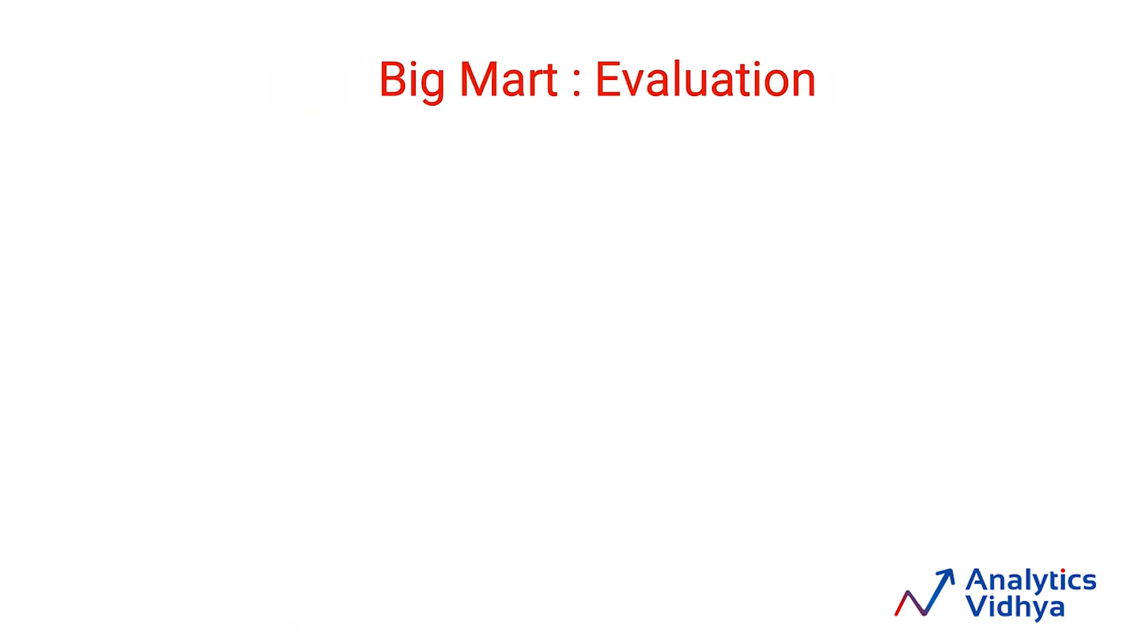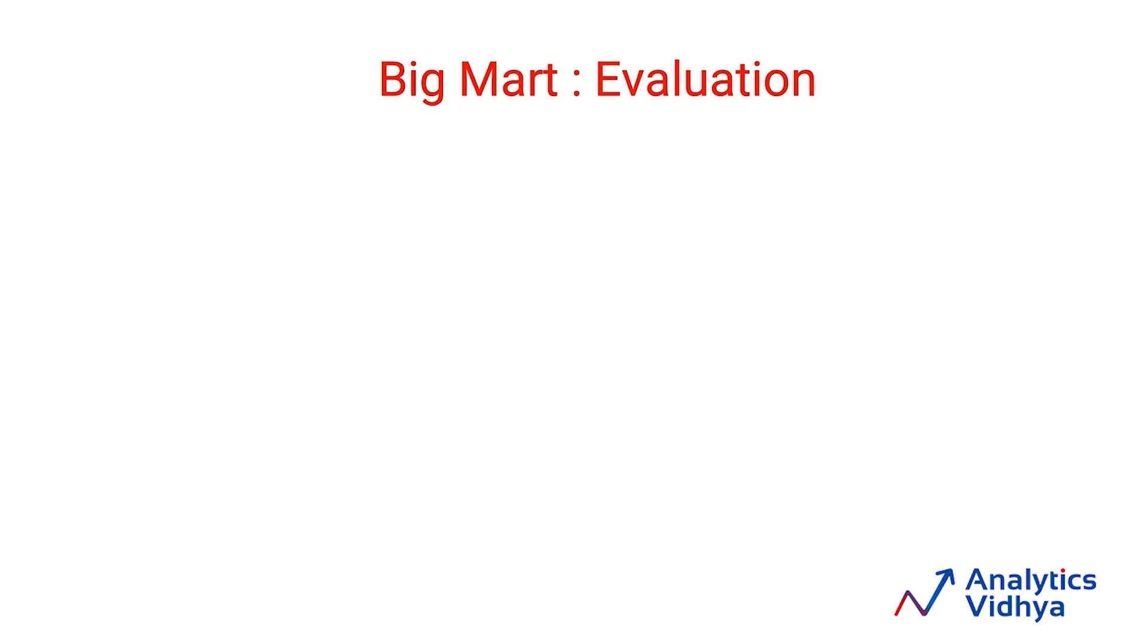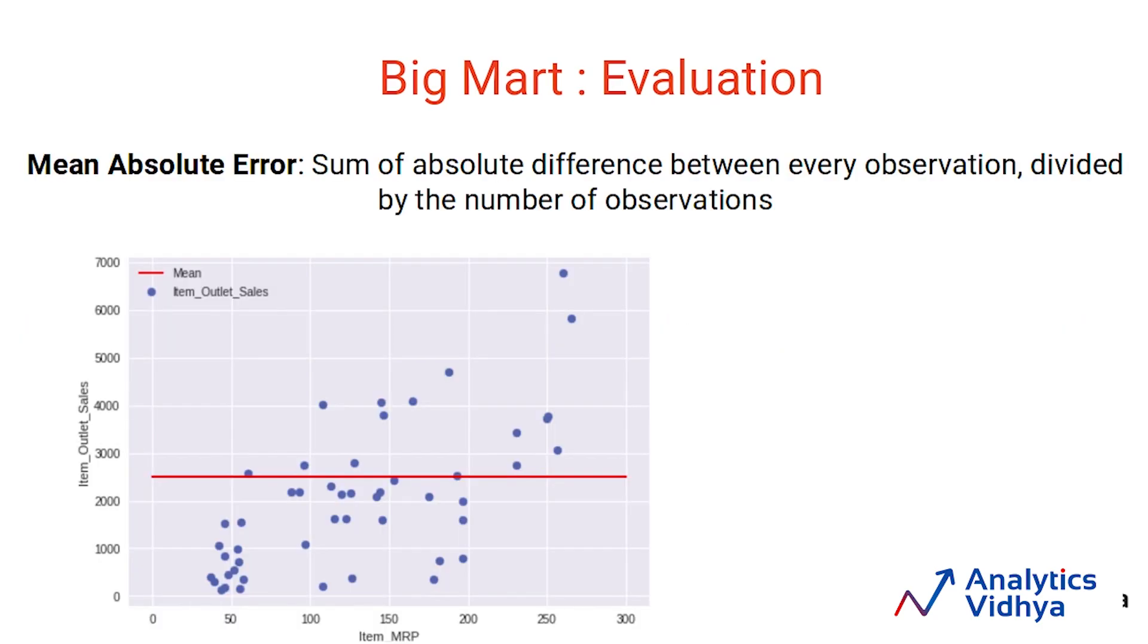But the problem is that it is very simplistic. We can further improve this by bringing in other variables into account. I can say what was the mean of products which had high fat content or low fat content or high weight or low weight. I can continue to improve this by bringing in more variables. But I'm just taking means across these segments of the products which I have in my dataset. This becomes my benchmark model. Once you've built this model, how do you evaluate it? The simplest way to evaluate any model is mean absolute error.